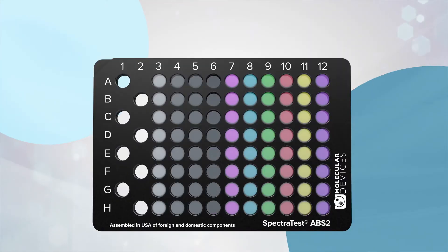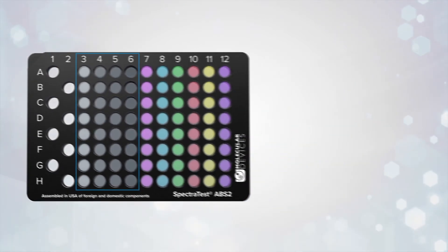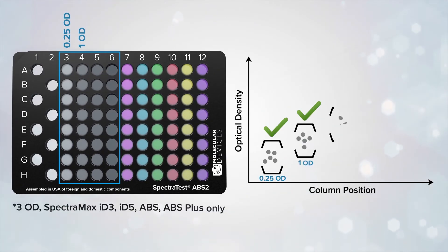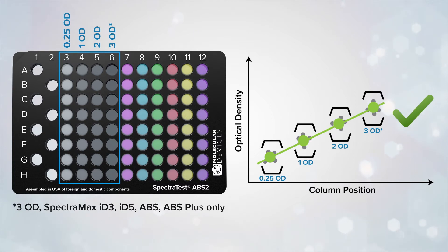To test the photometric accuracy, precision and linearity, columns 3 through 6 contain filters with increasing optical density. Multiple measurements are conducted at four different optical densities. Afterwards, the mean variation and the linearity is calculated.